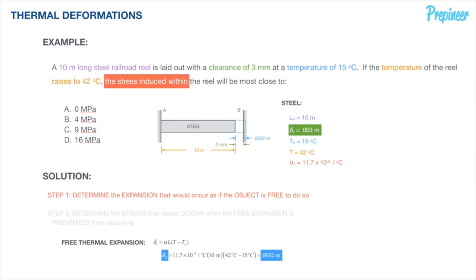We place the constraint back at point B, which pushes the deformation back and creates a reaction force at the wall. The blue dotted line is the free expansion, partially prevented by the constraint offset at 3 millimeters. That remaining segment — delta_sc, or steel constrained — equals the free expansion minus the clearance. The reel can freely expand up to 3 millimeters; only the excess beyond that creates stress.